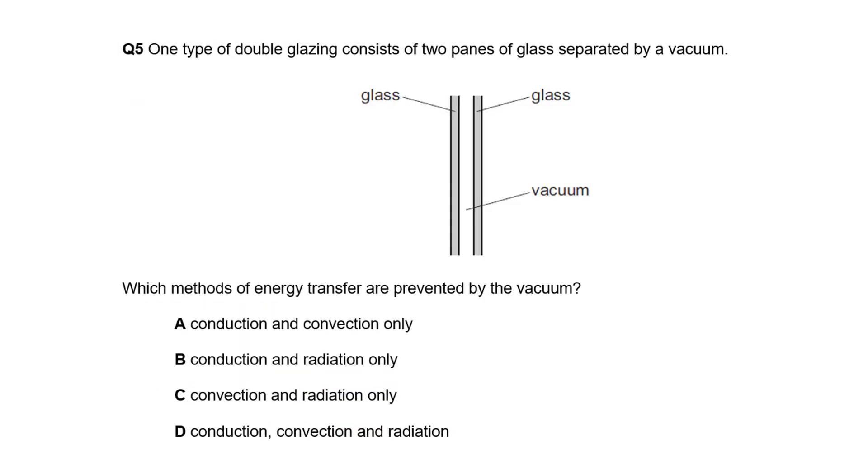Double glazing with two panes of glass separated by a vacuum. Which methods of energy transfer are prevented by the vacuum? Both conduction and convection need particles to carry energy. Radiation doesn't. So radiation is not affected by a vacuum, but conduction and convection are. That makes A the correct answer. Conduction and convection would both be stopped, but radiation wouldn't.